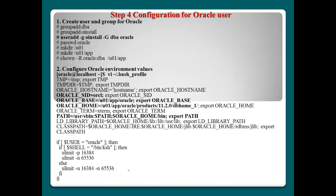Step 4, configuration for Oracle user. Oracle normally needs its own user name. In my case, I will use the username 'oracle'. Before we create the user oracle, we have to create group names like 'dba' and 'oinstall'. Then I will create the directory /u01/app. I will install the Oracle database there, so we need this directory structure.